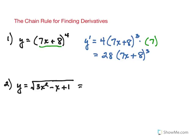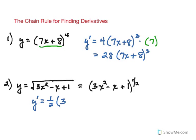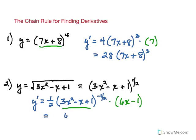For this next one we're going to want to think of the square root function as being raised to the 1/2 power. It's very similar to the first problem. Starting on the outside, the 1/2 goes to the front, and remember it's one derivative at a time, so we keep the argument for now. It's going to be raised to the negative 1/2, because you take 1 away from the exponent. Now we go inside and multiply by the derivative of this — we need that in parentheses. We can leave the answer as that, or rewrite it with 6x minus 1 taking the square root quantity to the denominator.